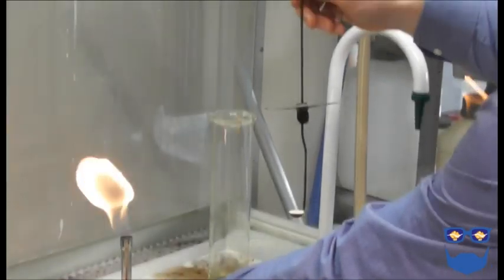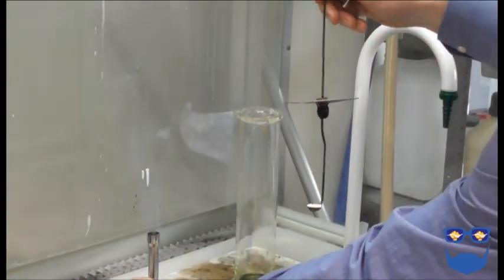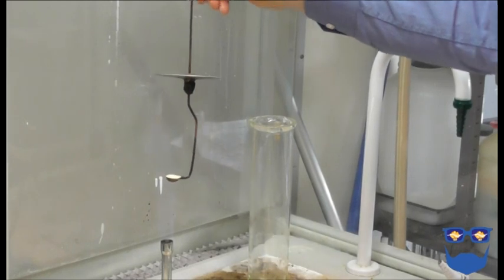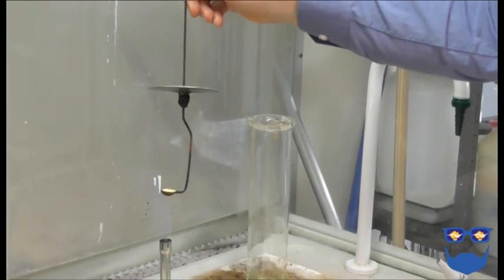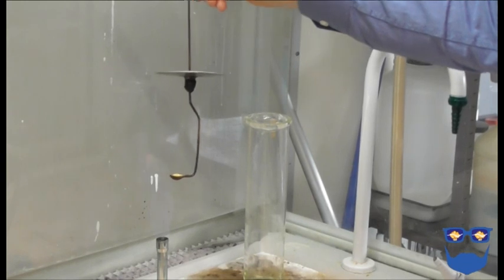Heat up the sulfur. I'm using a Bunsen flame here but I have used a lighter in the past. You're expecting the sulfur to melt and then combust with a blue flame.